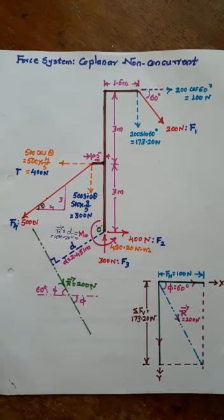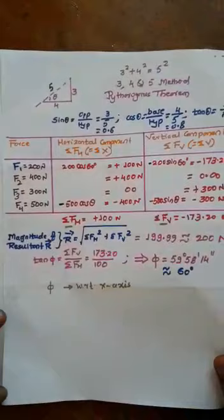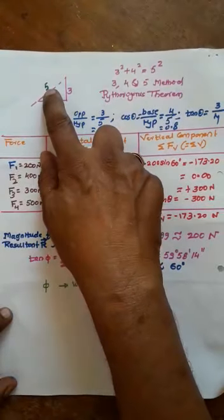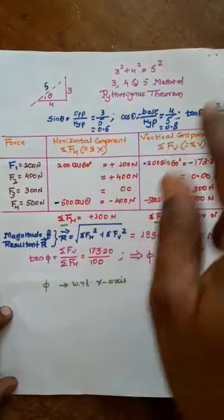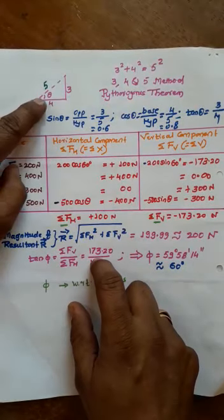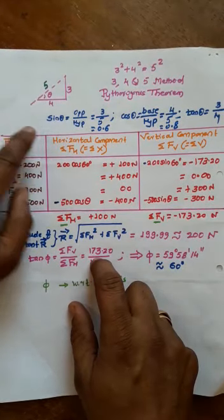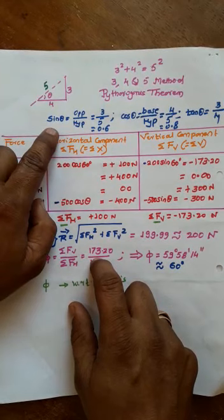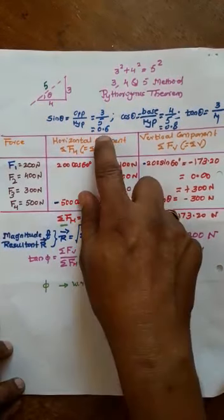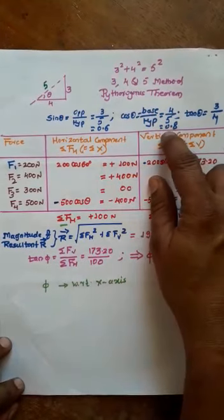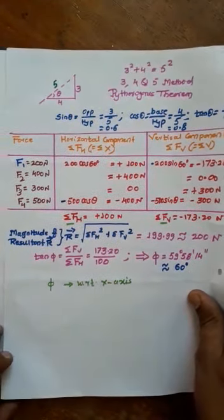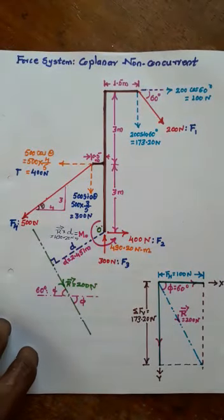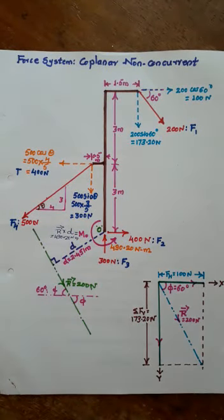From the diagrammatic representation, this is a 3-4-5 triangle method — 3² + 4² = 5² by Pythagoras theorem. Calling the angle theta: sin θ = opposite/hypotenuse = 0.6, and cos θ = base/hypotenuse = 0.8. We can now convert the force into its horizontal and vertical components.